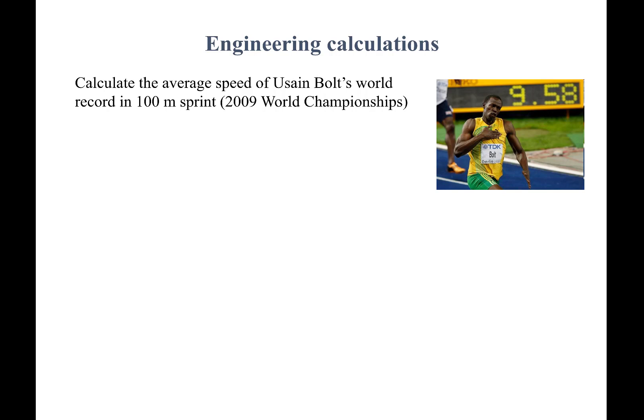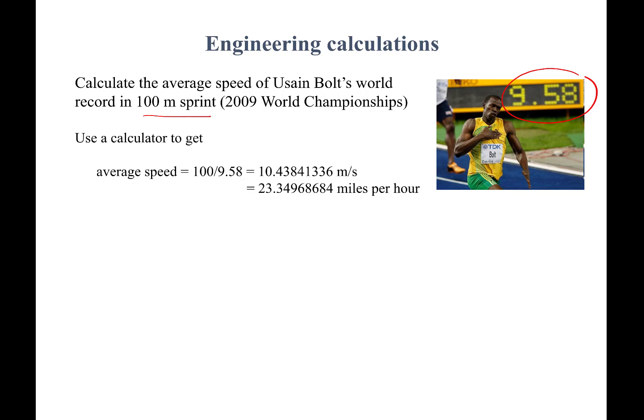Here is a picture of Usain Bolt when he won the world championship in 2009. His average speed could be calculated based on the distance he traveled and the time it took him to run that race. The clock shows 9.58 seconds — only two digits after the decimal — and he ran a distance of 100 meters. Computing the average speed, distance over time, gives 100 meters divided by 9.58 seconds. Plugging into a calculator and doing the division gives a lot of digits. Converting to miles per hour gives 23.34968684 miles per hour.